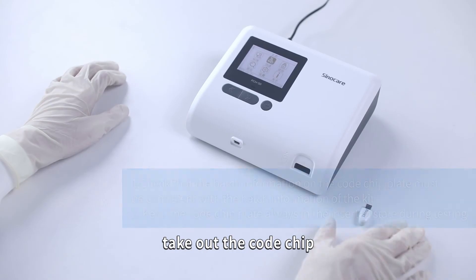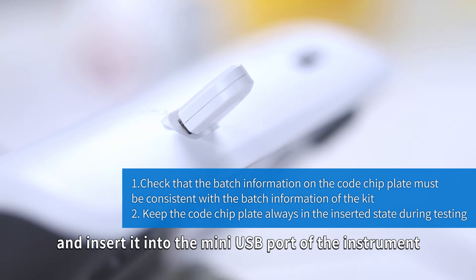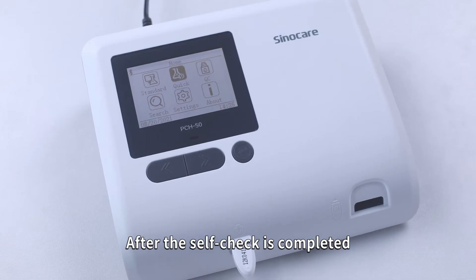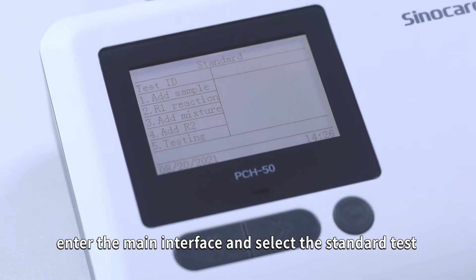Switch on the instrument, take out the code chip, and insert it into the mini-USB port of the instrument. After the self-check is completed, enter the main interface and select the standard test.